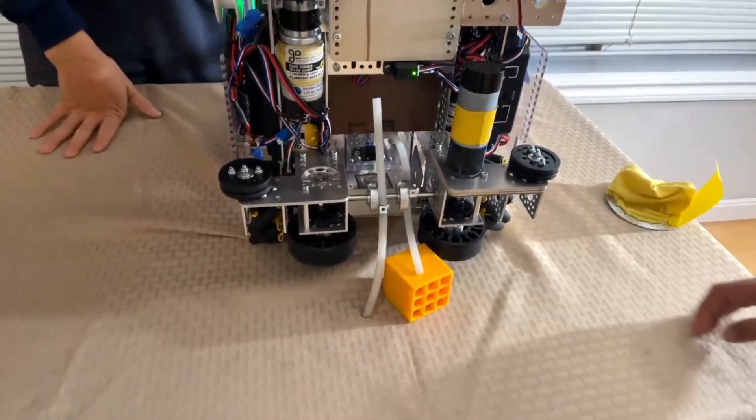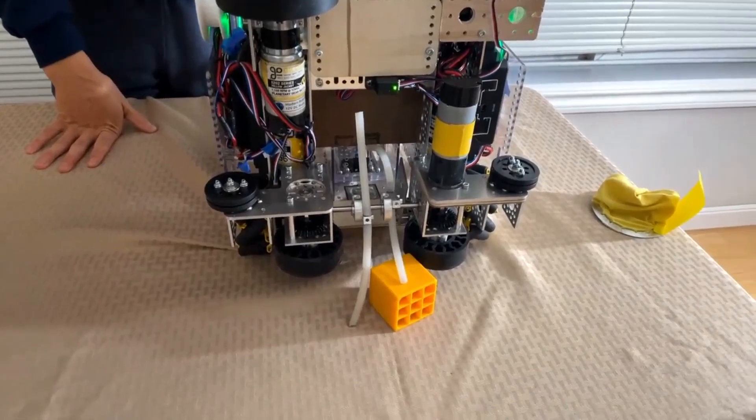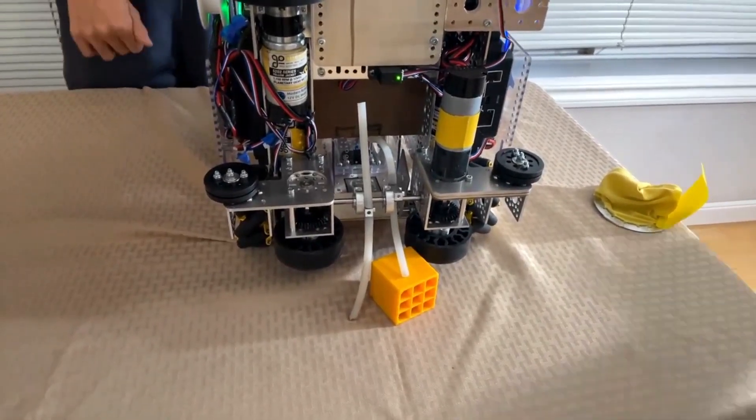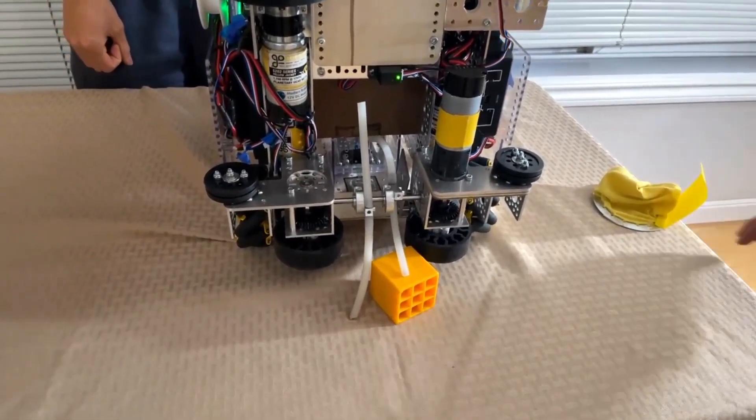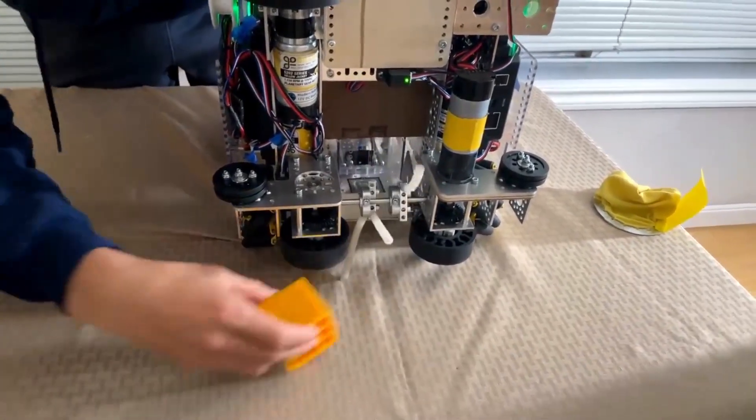Okay. So our intake has two main features. There are these noodles and there are these side funnel wheels. So originally we only had these noodles. However, we found that we had to line up with the game objects really precisely. So we added these funnel wheels that allow us to get a much wider range of game objects. This allows us to pick up game objects much faster.